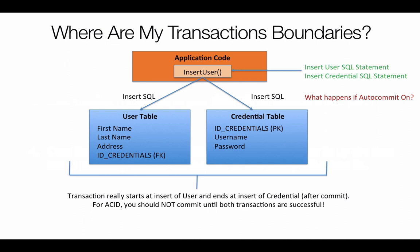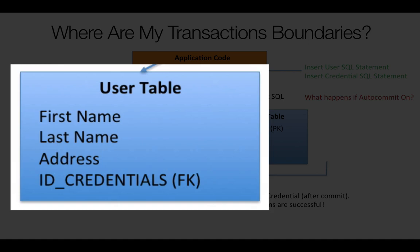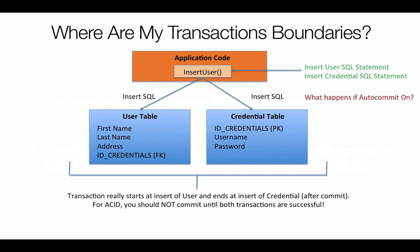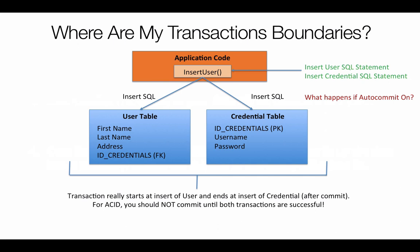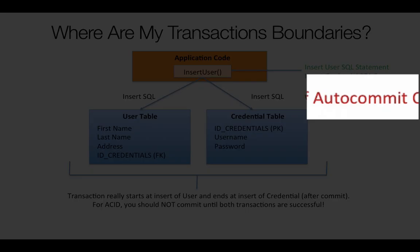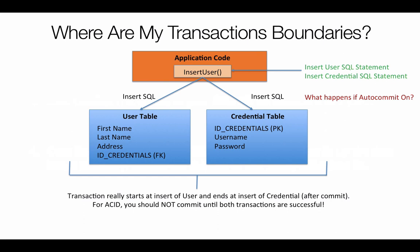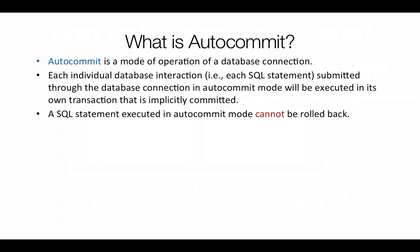Here's another example of where you might use ACID procedures. Let's say we create a new user. There are two tables to update: the users table, which includes first name, last name, and address, and the credentials table, which might have the password and username. You want to make sure that both tables update together or not at all. Because if you have auto-commit turned on, your users table might get the new user, but the credentials table might not. Auto-commit is something we're going to look at and actually turn off when we get to our coding.